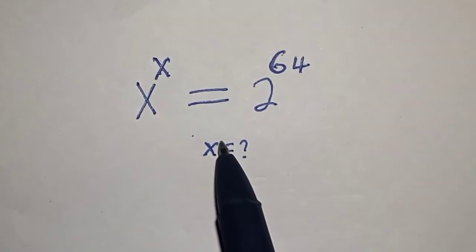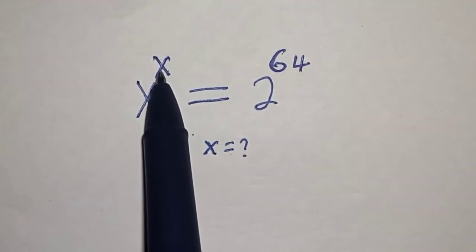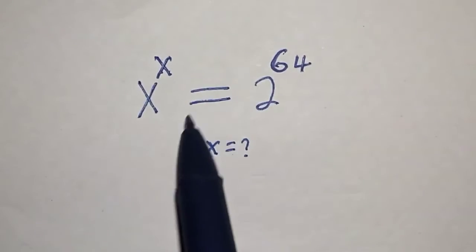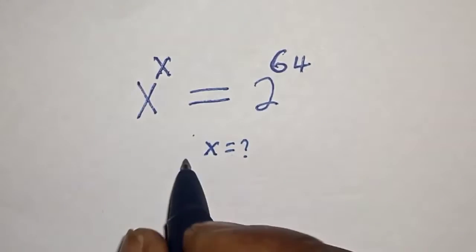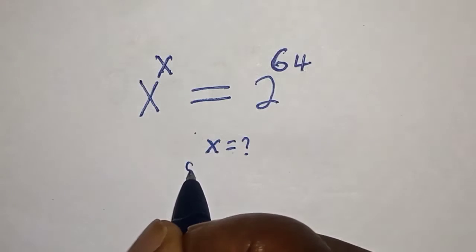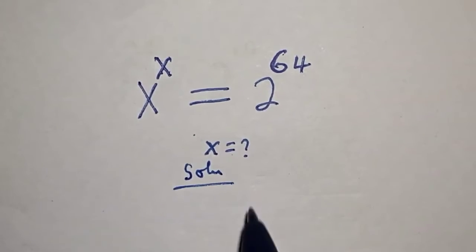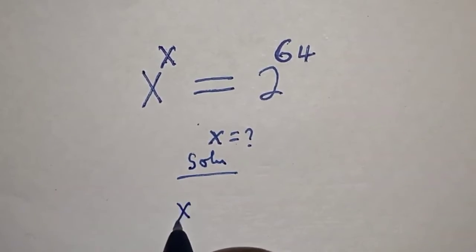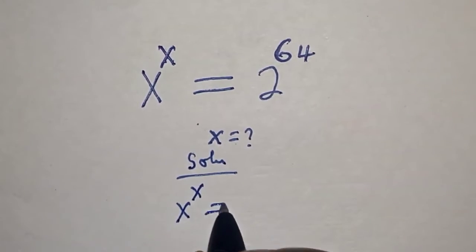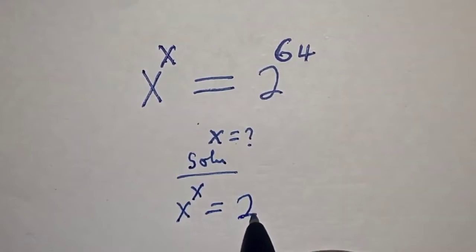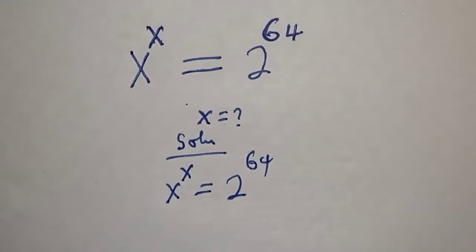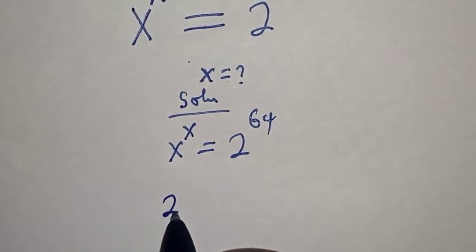Hello, welcome to Magic. In this class we want to find the value of s from this equation: x to the power of s is equal to 2 to the power of 64. Like, share, comment, and subscribe. The given equation is s to the power of s is equal to 2 to the power of 64.